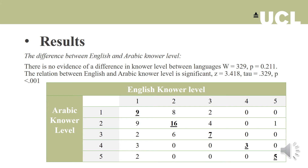The results showed that there is a general trend for older children to achieve higher levels. However, the frequency of two-knowers is still extremely high in the oldest age group in both languages. The high proportion of two-knowers suggests that dual case comprehension may have an influence on number concept development in general. Contrary to expectations, there is no difference between English and Arabic knowledge levels. In fact, there is a strong correlation between them.